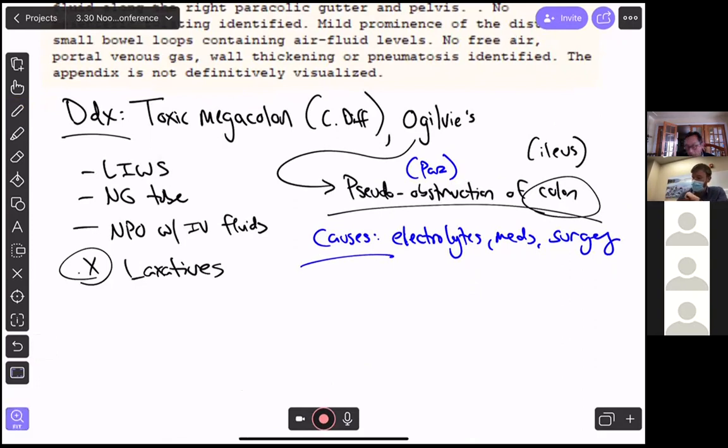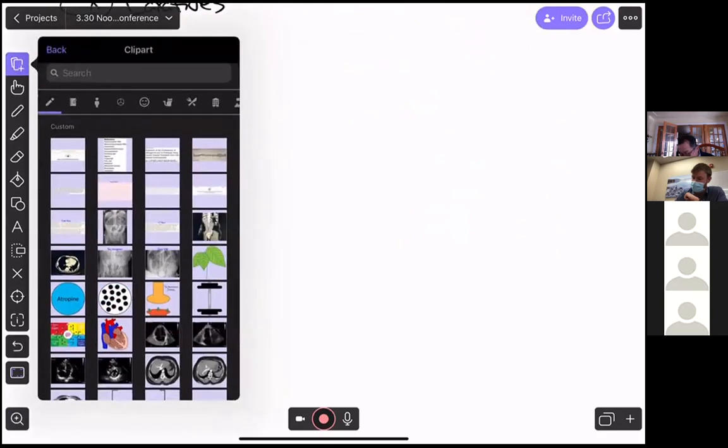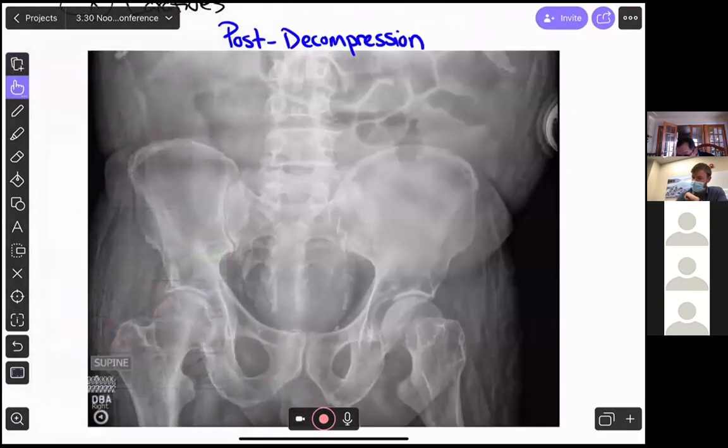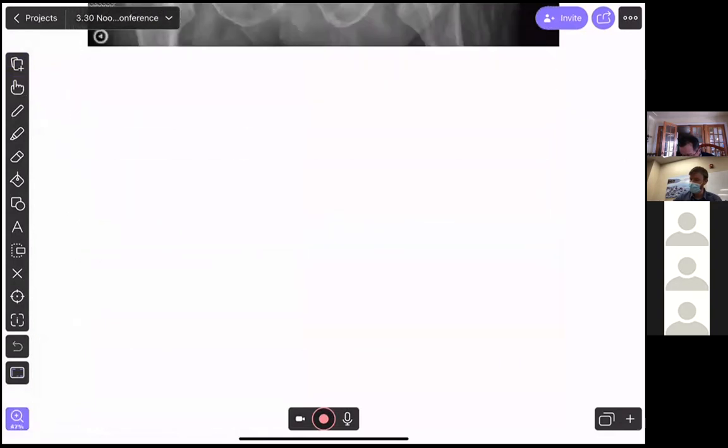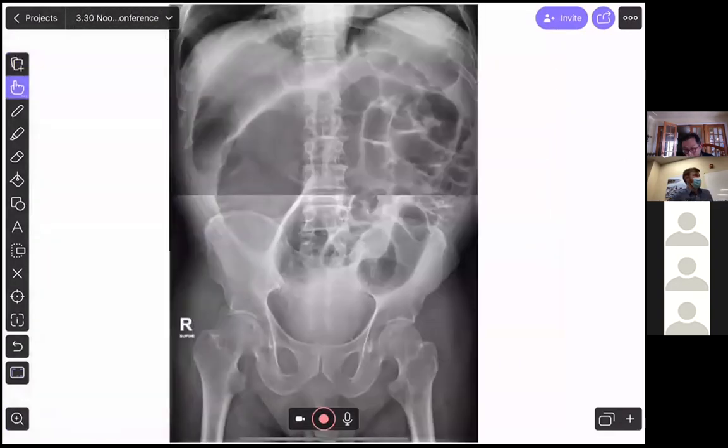So this person does not get better with those treatments, and eventually undergoes a colonoscopy with decompression by GI. And this is their post-decompression film. And I think we can all agree that this looks substantially better. Unfortunately, this person gets worse again. Here's a noon conference. This person has to get worse again. And they start to have recurrent symptoms of their Ogilvy's. So 10 days later, a repeat scan is obtained, a repeat x-ray.